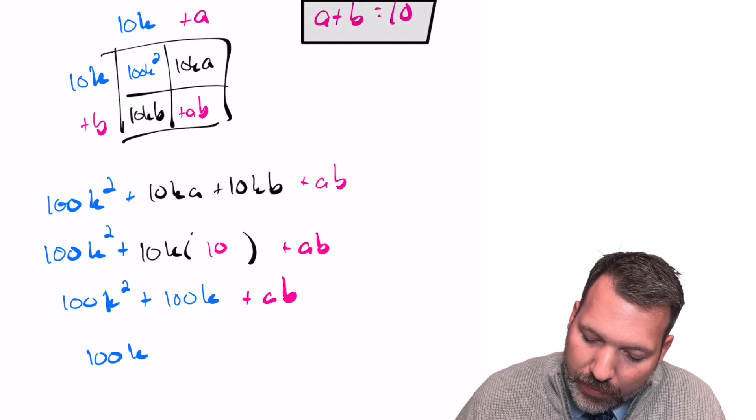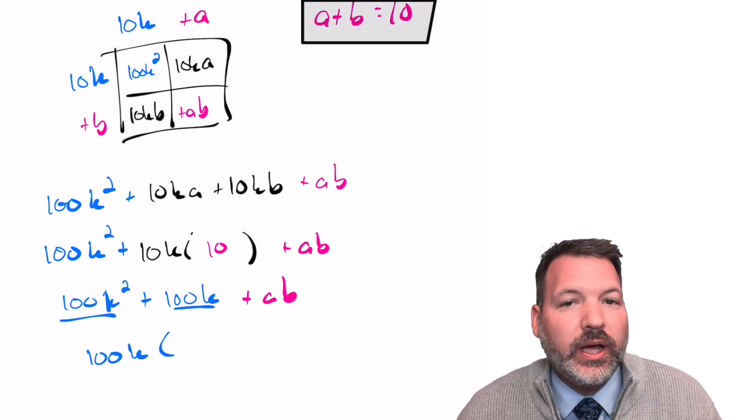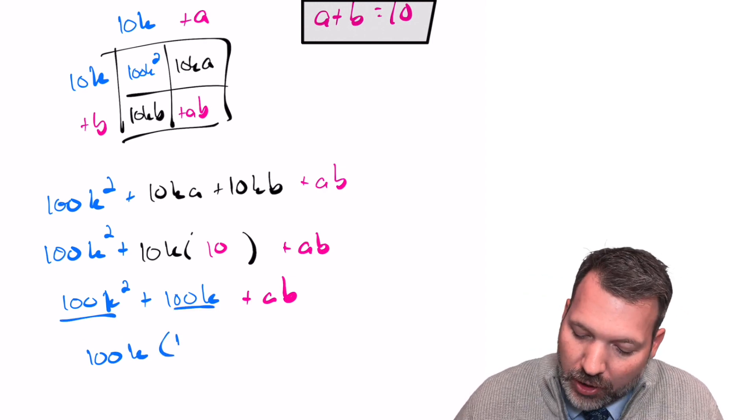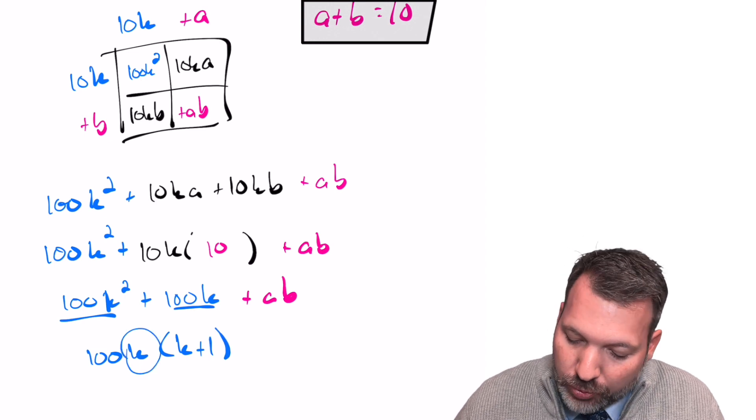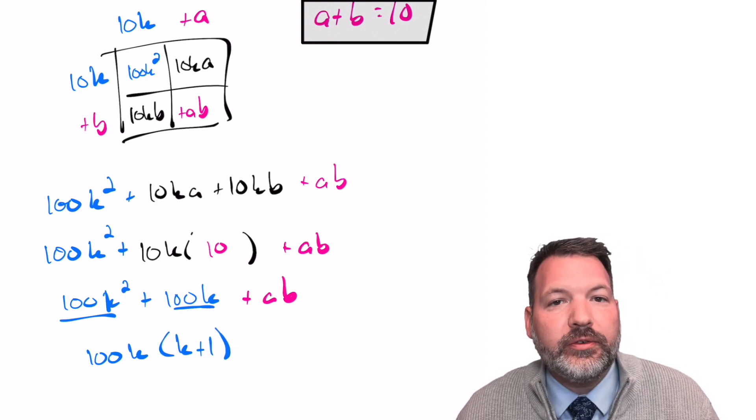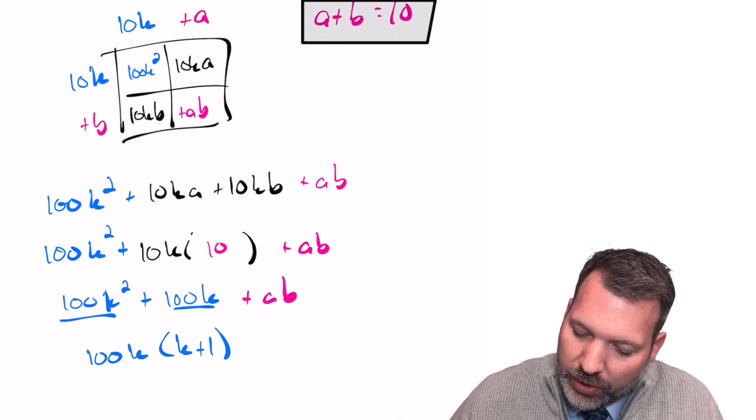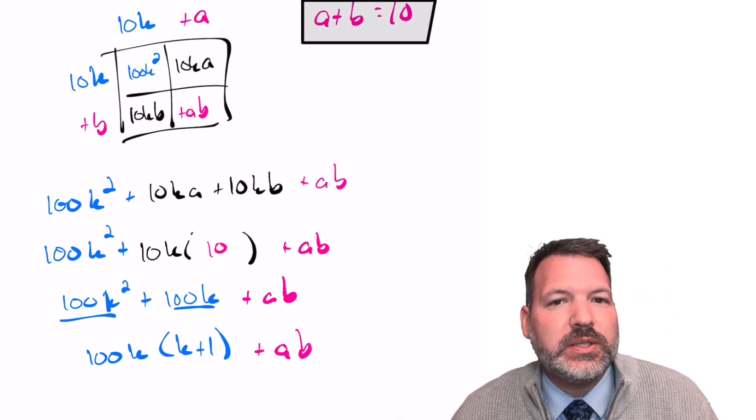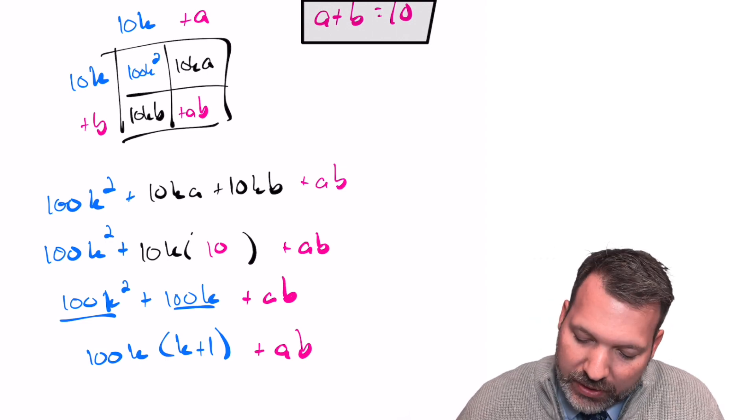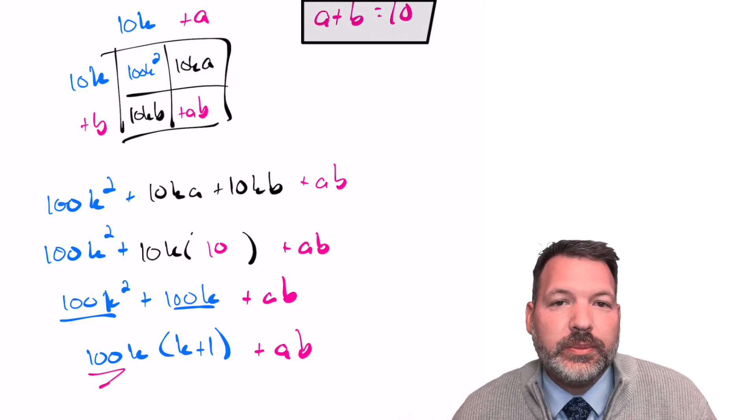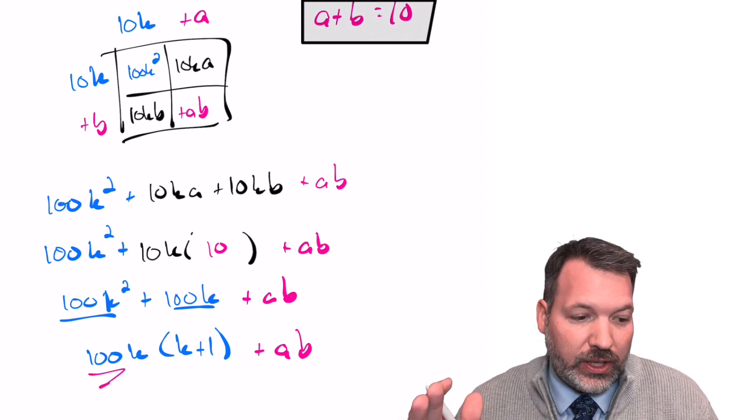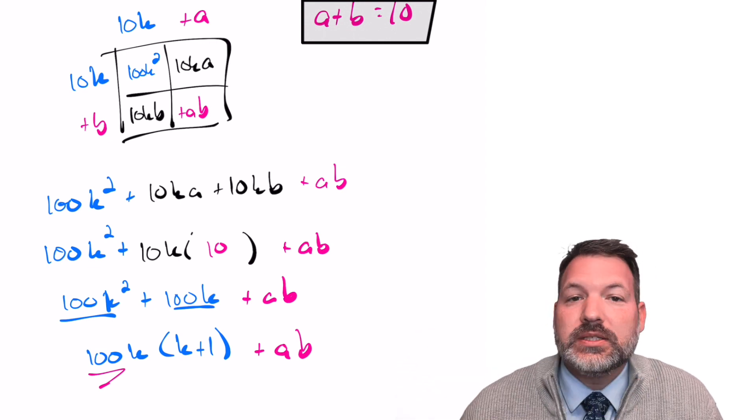Meaning if we factor one more time, we can see a common 100k between those first two terms, we can see where that idea of three times four was coming from, whatever our tens digit is, times the next number up, we can also see why it didn't interact with this plus ab product at all. Because this 100 in front of the k times k plus one is telling us essentially move two place value spaces to the left.